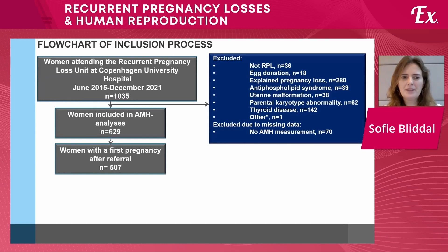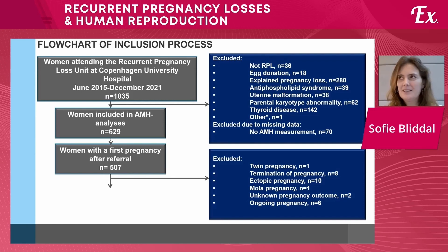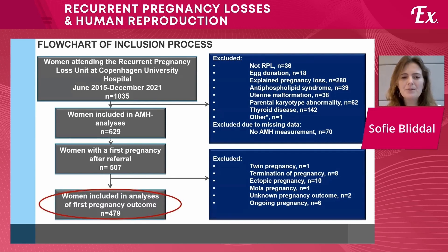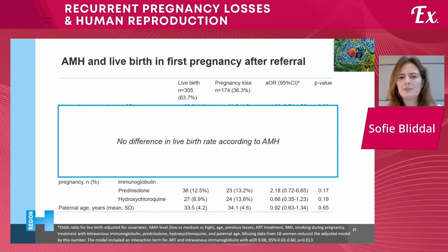Of the 507 women, we excluded those with other risk factors such as twin pregnancies, terminations, ectopic pregnancies, molar pregnancies, those with unknown outcomes, and ongoing pregnancies. In total, we were able to include 479 women. The basic conclusion was that there was absolutely no difference in live birth rate according to AMH, regardless of any of the confounders included.